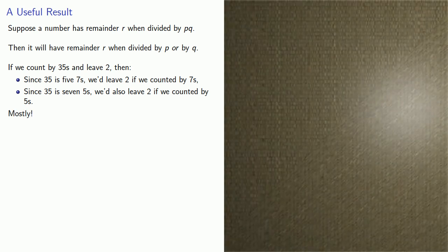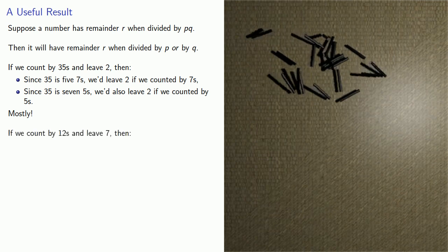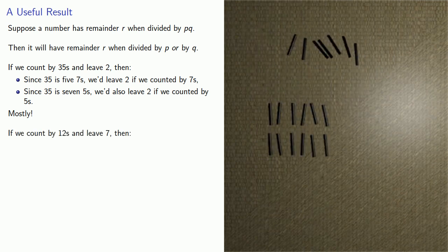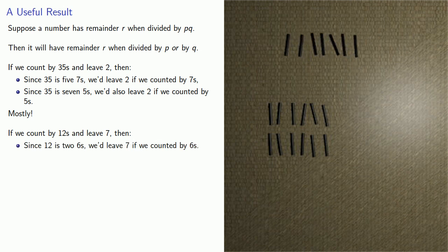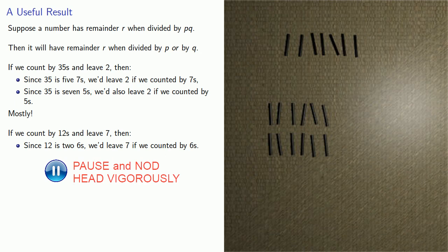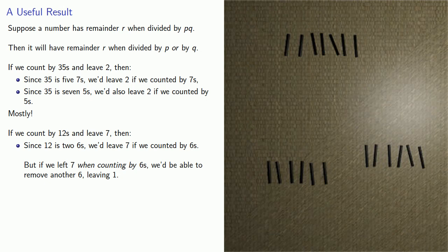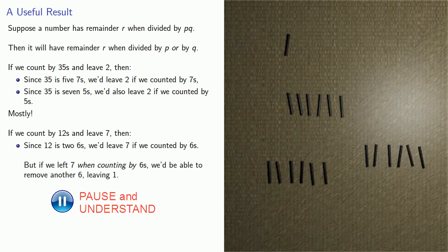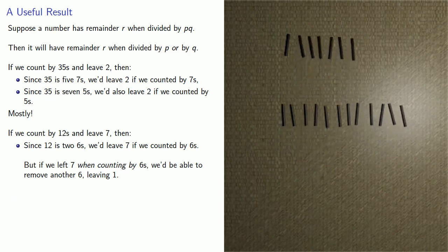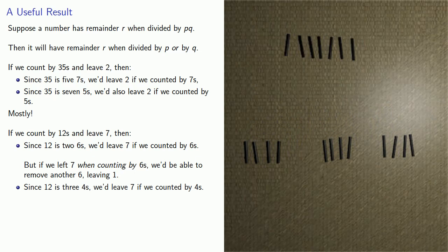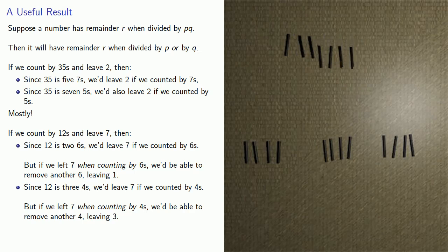Now this is mostly true, but there are some wrinkles. Suppose we count by 12s and leave 7. Since 12 is 2 sixes, we'd also leave 7 if we counted by 6s — but if we left 7 when counting by 6s, we'd be able to remove another 6, leaving just 1. Similarly, since 12 is 3 fours, we'd leave 7 if we counted by 4s. But if we left 7 when counting by 4s, we'd be able to remove another 4, leaving just 3.